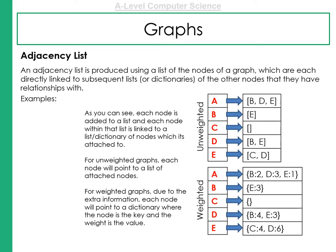So here you can see when it's unweighted, A is linked to B, D and E. B is linked to E. And because this is directional, if we look at E, it's not linked back to A because this is a directional graph.